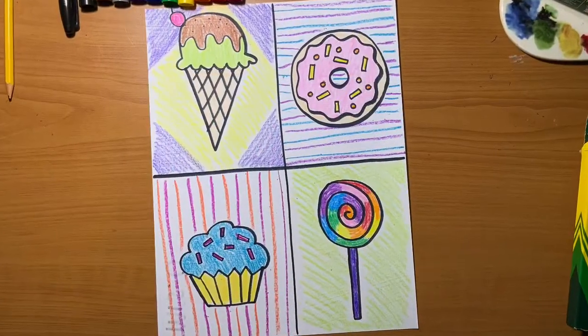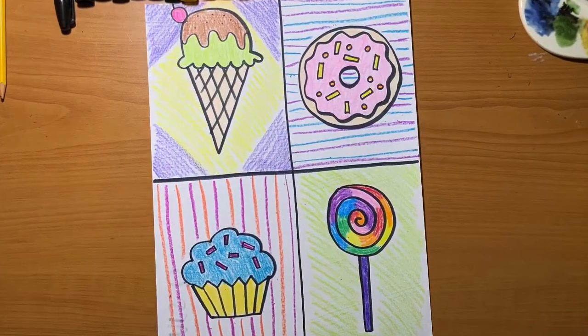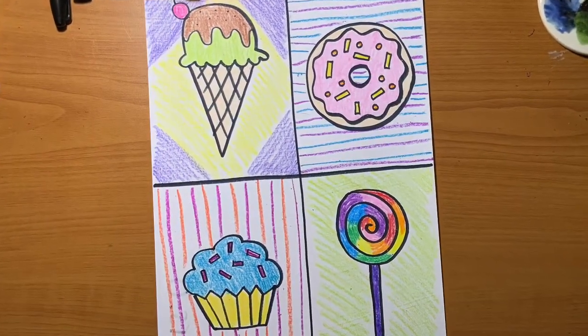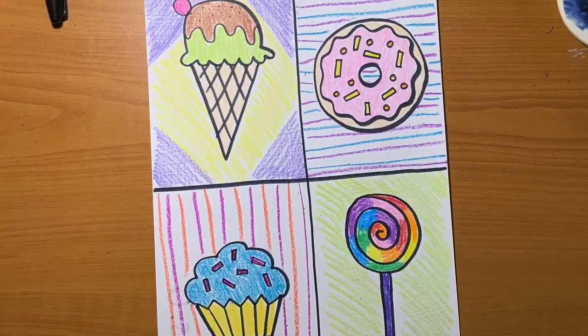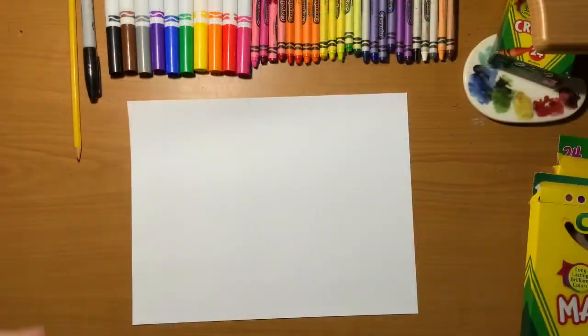We are going to create four sweet treats, four desserts. We're drawing an ice cream cone, a donut, a cupcake, and a lollipop.